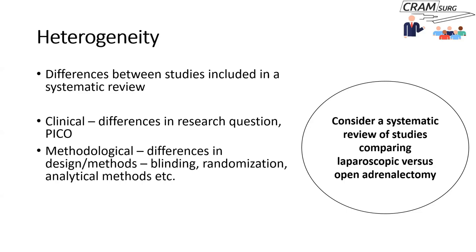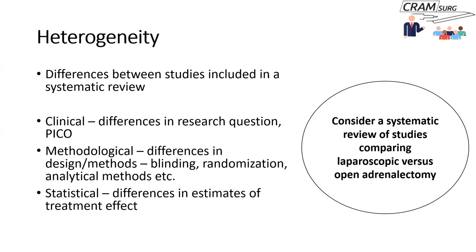The next kind of heterogeneity is methodological heterogeneity, where there are differences in study designs and methods employed. There could be an RCT with no blinding at all, and another RCT where there's blinding in certain aspects. There could also be differences in randomization and in how analyses are done.